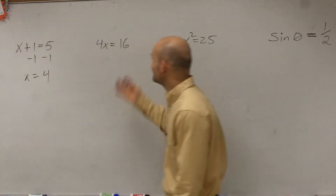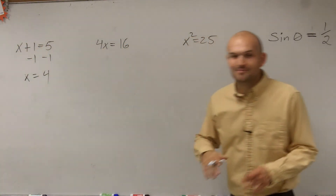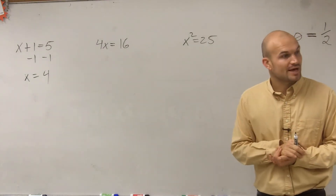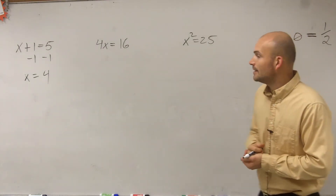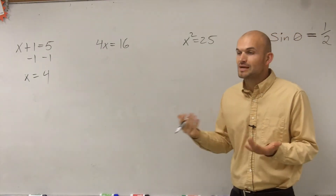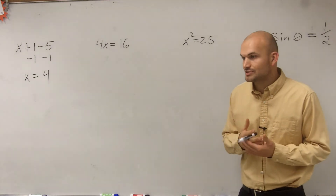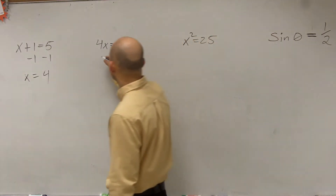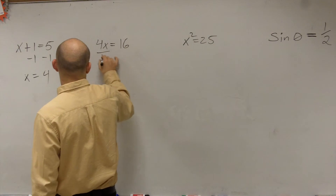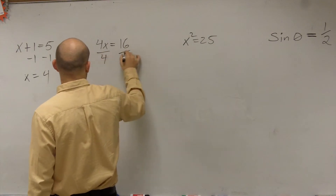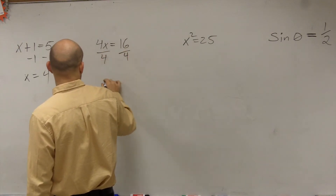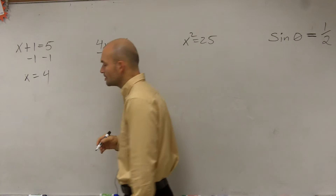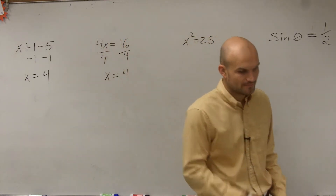Now let's look at multiplication. We can see here that my variable is being multiplied by 4. So the inverse operation of multiplication is going to be division. What we did was to isolate the variable — we divided by 4 using the division property of equality to get our answer of 4.